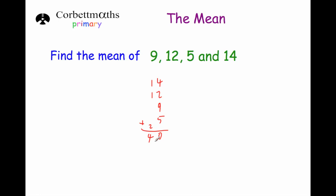So adding up those values gives us 40. Now we just need to divide by the number of values. So 40 divided by, well there's 1, 2, 3, 4 numbers, so we just divide by 4. 40 divided by 4 is 10, so the mean would be 10.